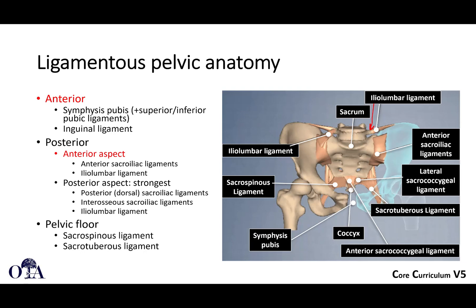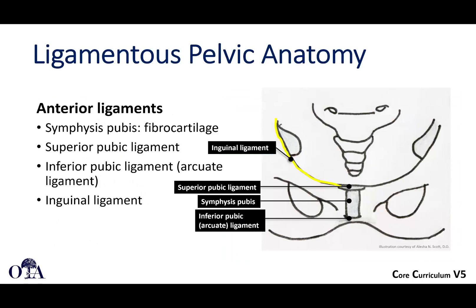Posteriorly, you have the posterior SI ligaments, which are the strongest ligaments here. When they're disrupted, typically that means you now have rotational and vertical instability. Let's not forget about the pelvic floor — these include the sacrospinous and sacrotuberous ligaments, which are disrupted in many injury patterns as well.